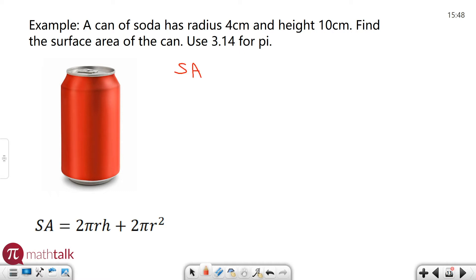The surface area is 2 times pi, which they said use 3.14, times the radius, which they told us was 4 centimeters, times the height, which they gave us is 10 centimeters. Then you're going to add 2 times pi times r squared. Pi is 3.14, r is 4.